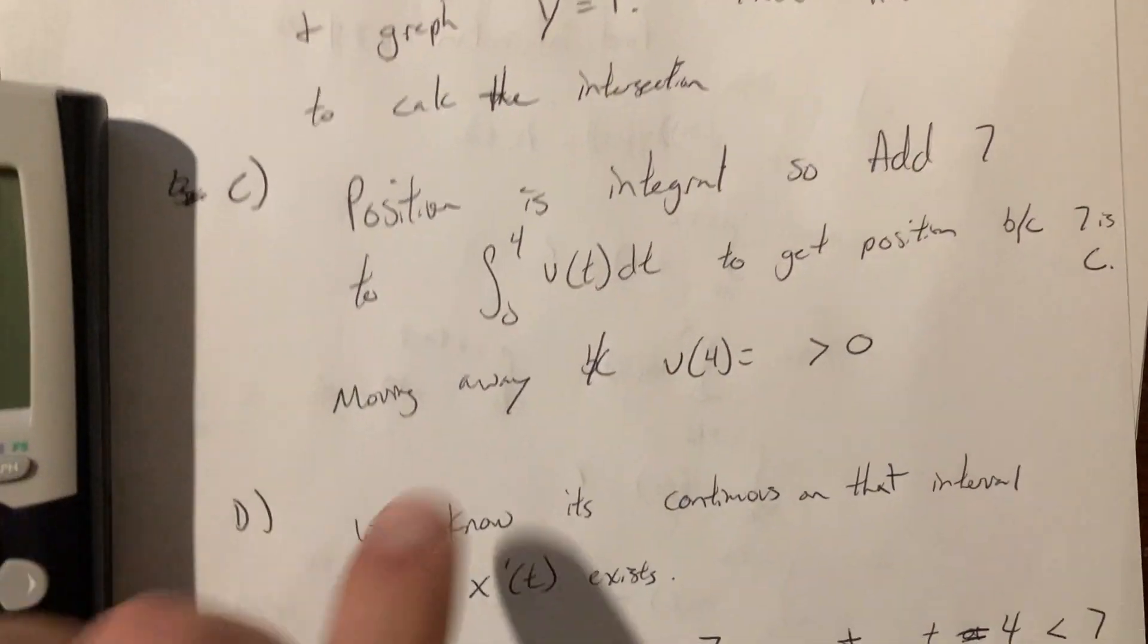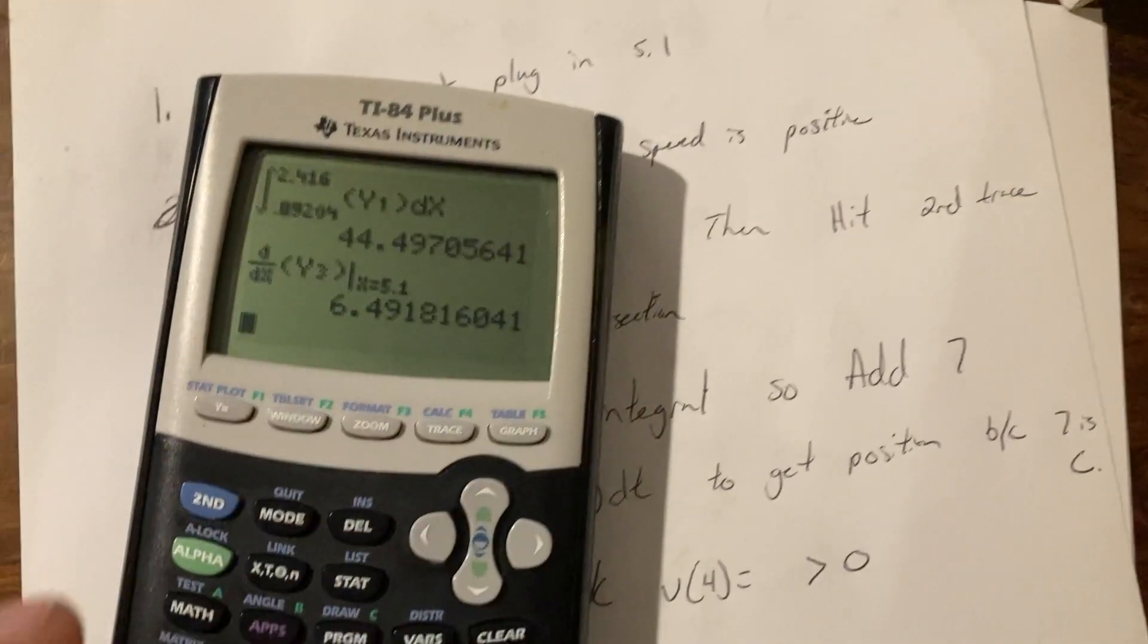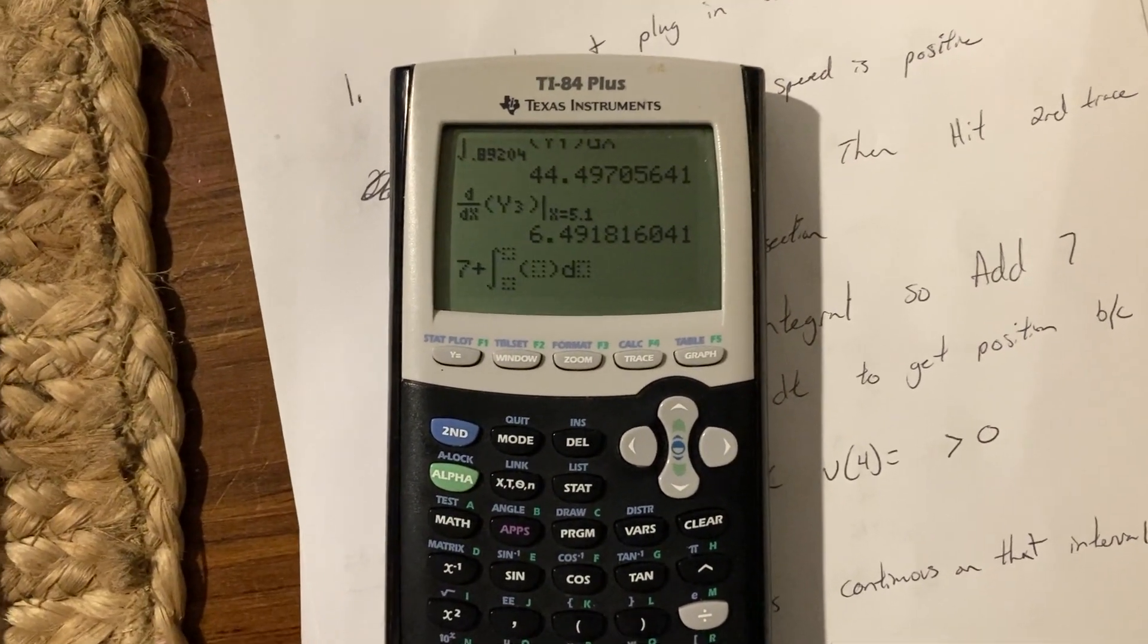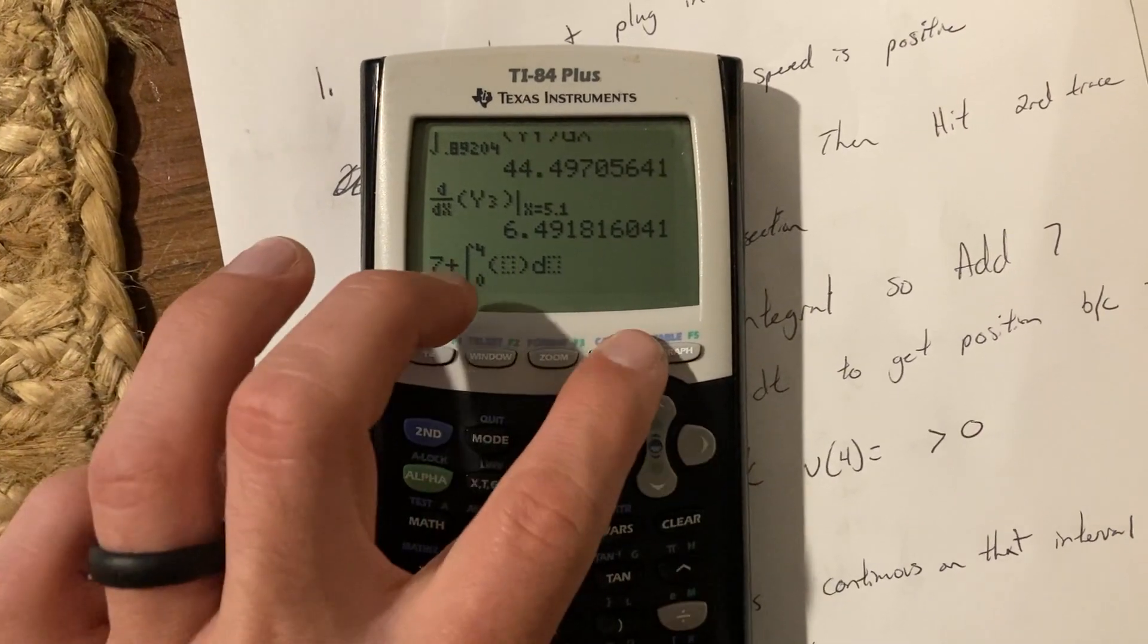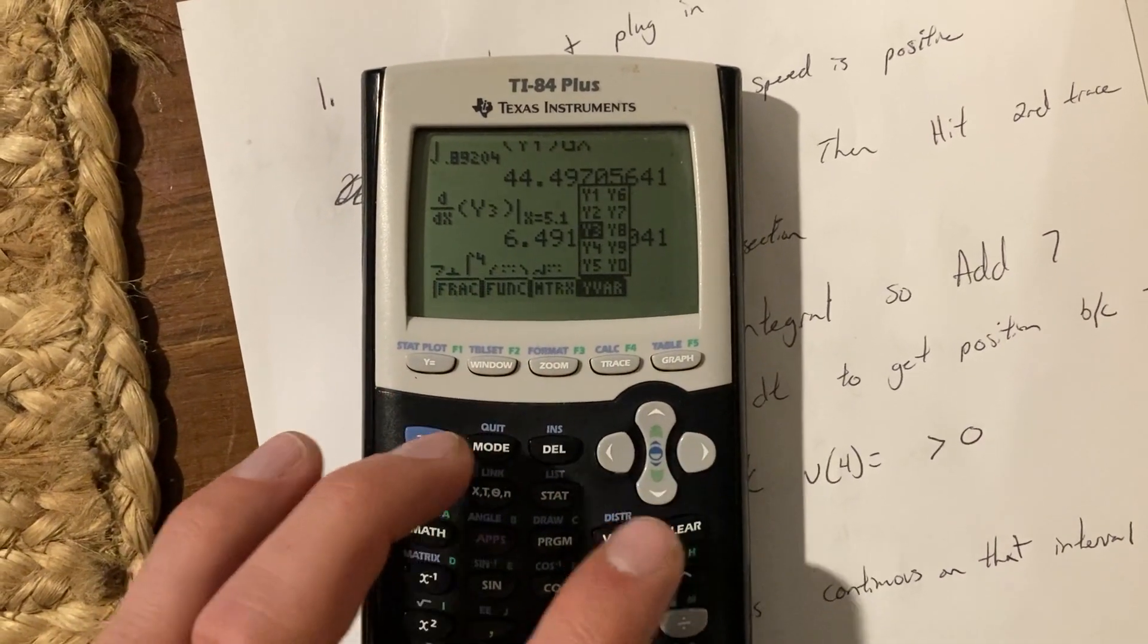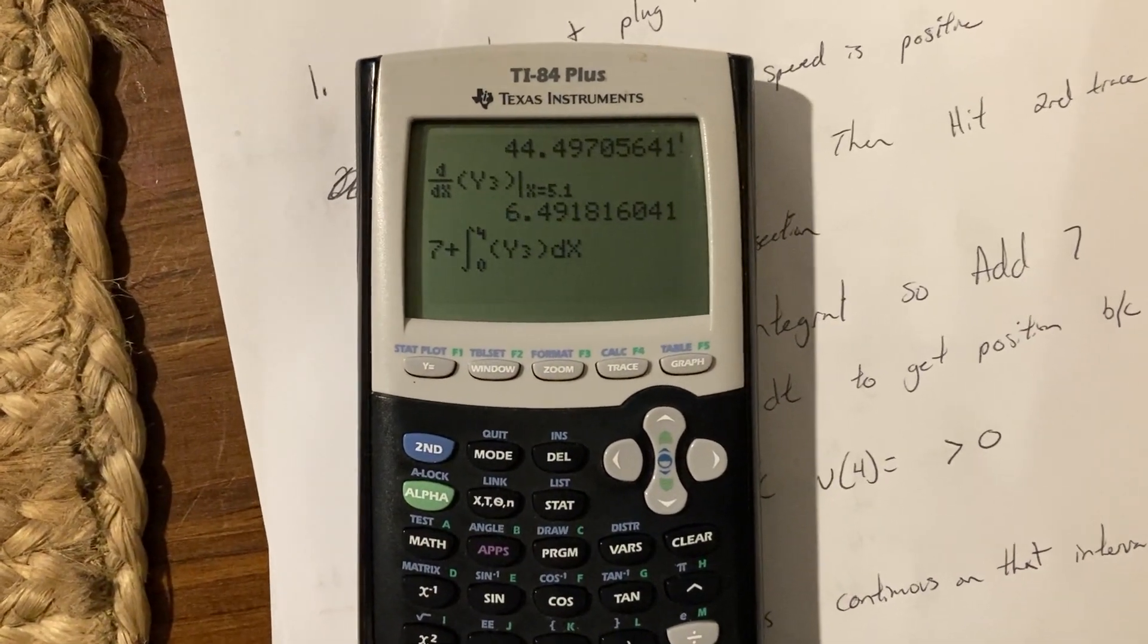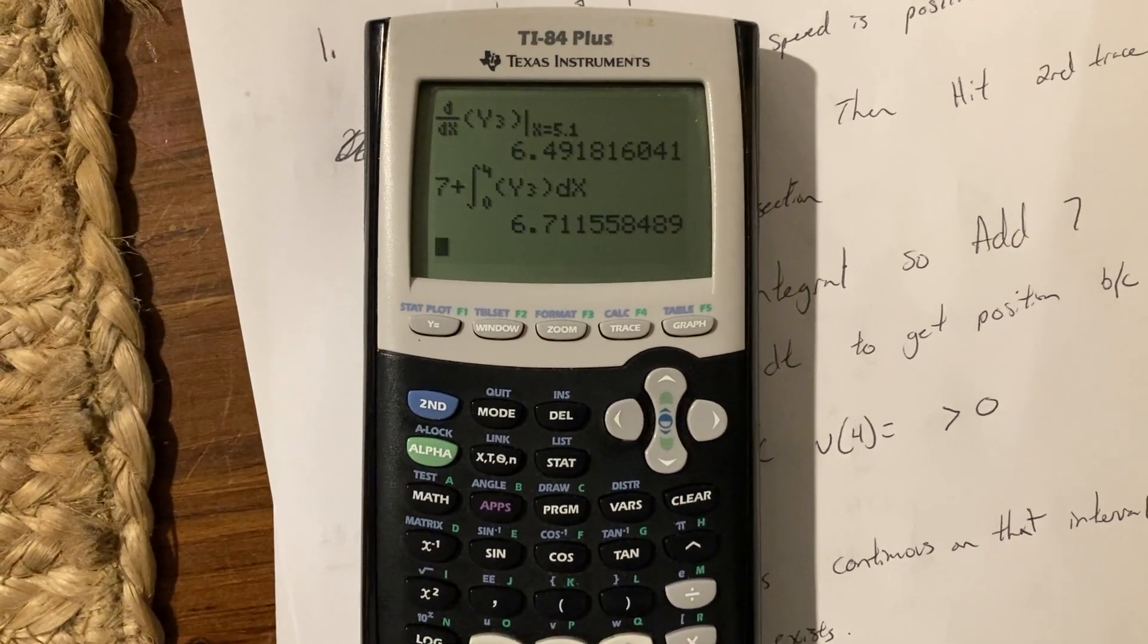And then I think we had to do an integral. Oh yeah, right here. 0 to 4, add 7 to that. So you can even do it like this: 7 plus math 9, 0 to 4. I saved it in Y3, with respect to X. Boom. There it is.